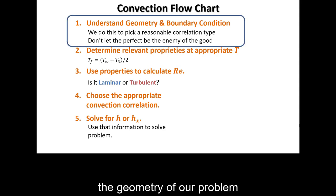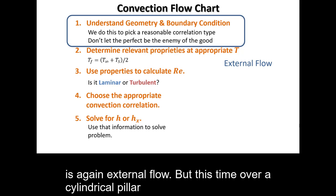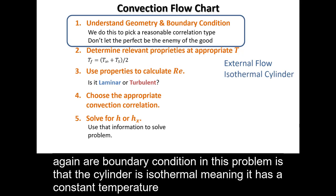The geometry of our problem is again external flow, but this time over a cylindrical pillar. Our boundary condition in this problem is that the cylinder is isothermal, meaning it has a constant temperature.